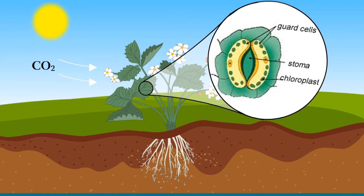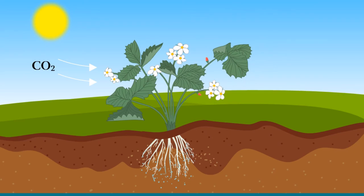Leaves absorb carbon dioxide from air through stomata. The roots absorb water and minerals from the soil. The water, minerals, and nutrients absorbed by the roots get transported to the leaves by pipes or tubes which run through the entire plant, forming a vessel system.